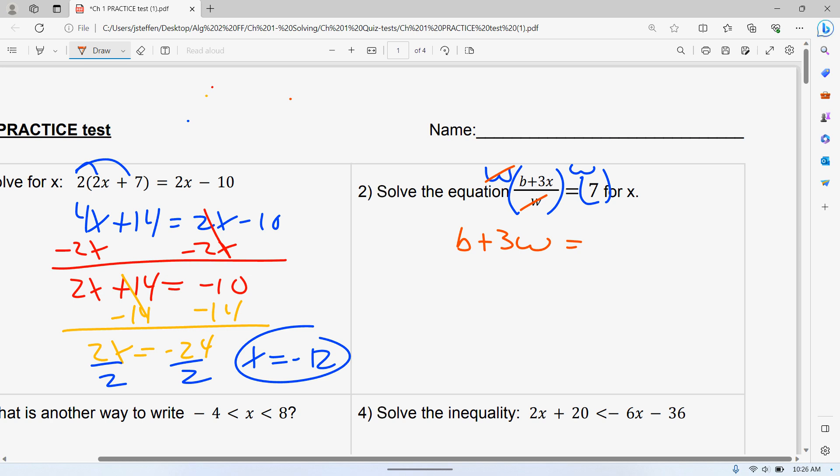Seven times W is seven W, or W seven, doesn't matter which order. Again, we wanted the X by itself, so I'm going to subtract the B.